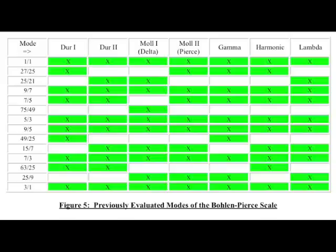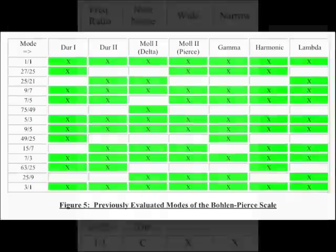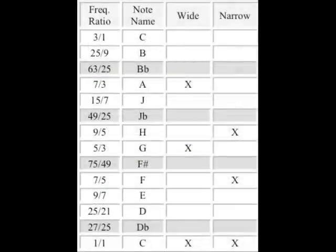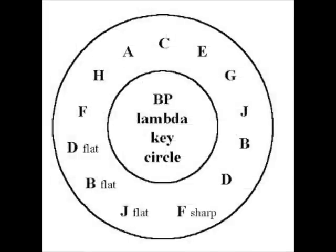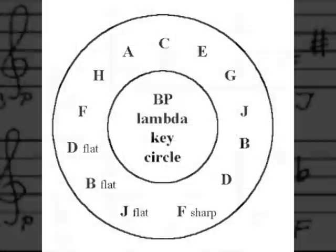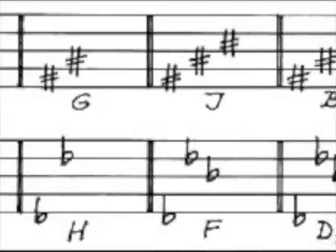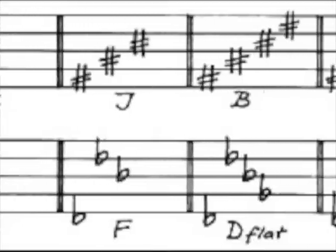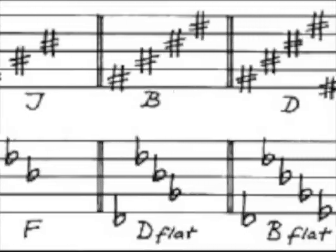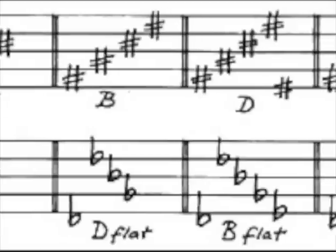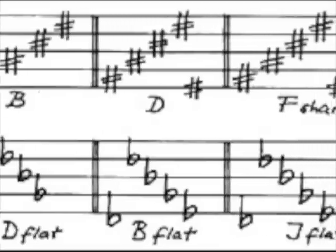However, all anyone had published to my knowledge were the seven modes shown here, in no particular order, and the two main triads that the tuning was originally derived from — the wide triad and the narrow triad. I noticed that lambda mode was referenced more than the others. I found a set of key signatures for it, for instance, but no specific reference was ever made claiming that it was the reference mode of choice.